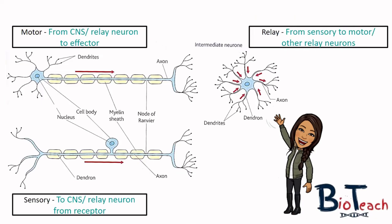For your assignment you need to include the structure of the motor and sensory neurons. Looking at the sensory neuron first, we have the cell body off to one side, a dendron and an axon, and dendrites at either end. This is a myelinated sensory neuron, meaning the speed of the impulse would be much quicker. This relates to how action potentials are generated, covered in another video linked in the description.